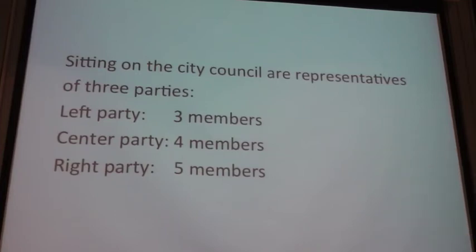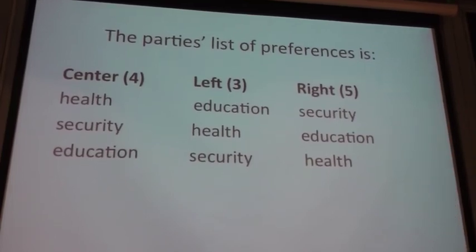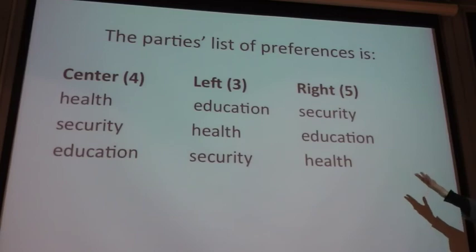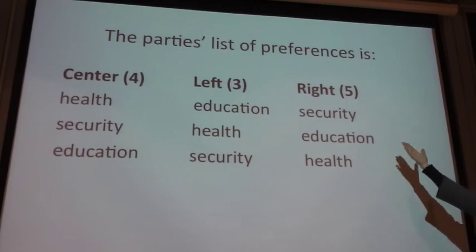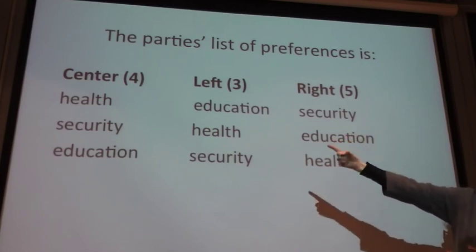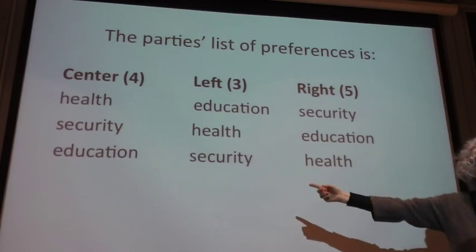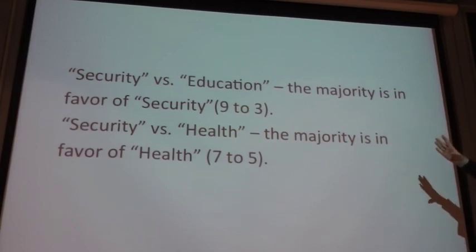We start with a more familiar story: a certain amount of municipal budget is unspent and the city council must decide how to invest it — in education, security, or health. The sum is too small to divide among all three options. The council has three parties with three, four, and five members respectively. The party with five members wants security, but the other two parties together can form a majority preferring health over security. When they vote pairwise — for example security versus education — the majority favors one, but cycling occurs.